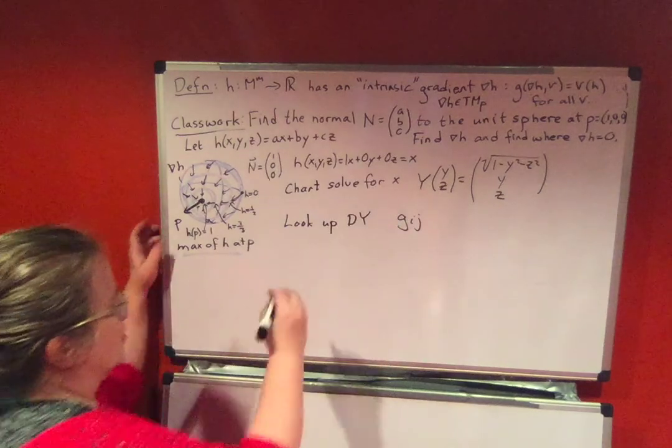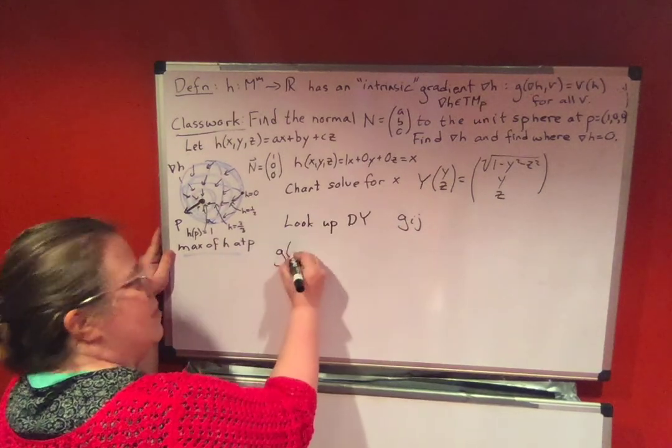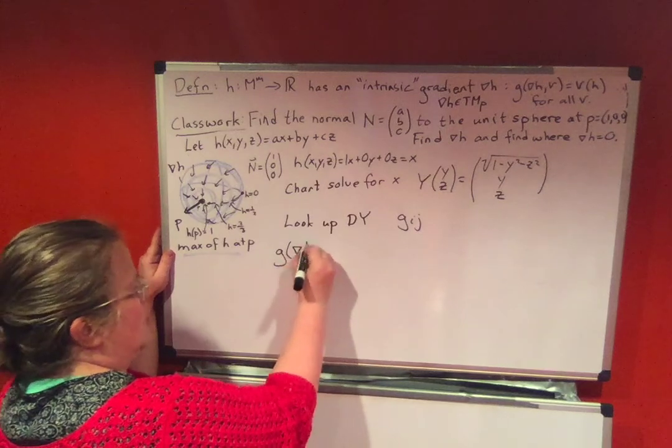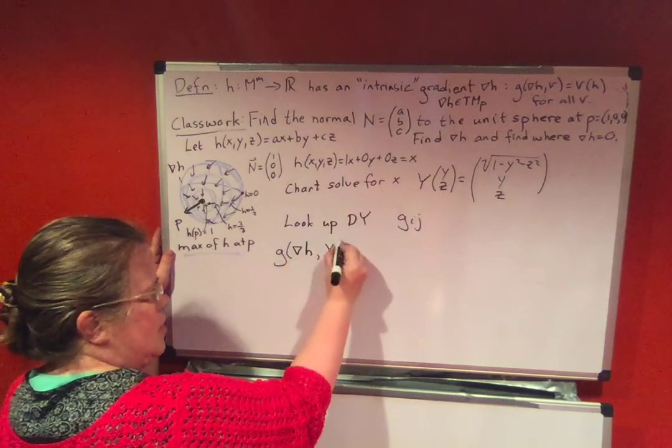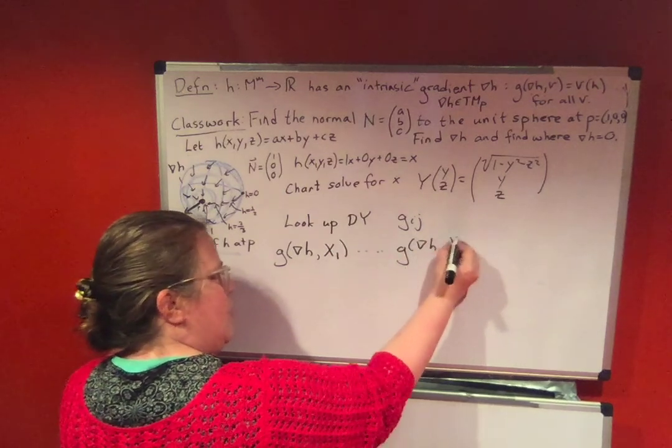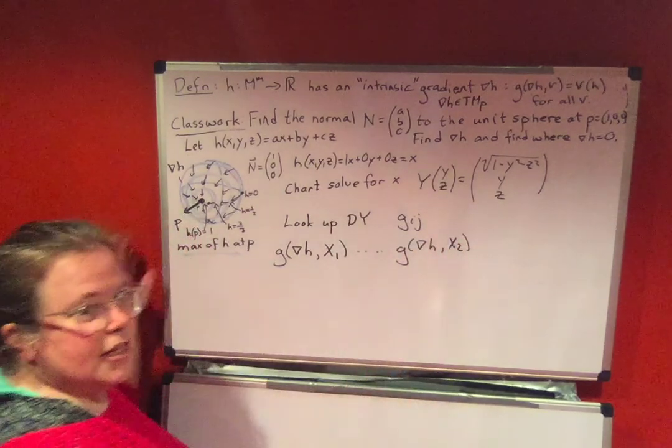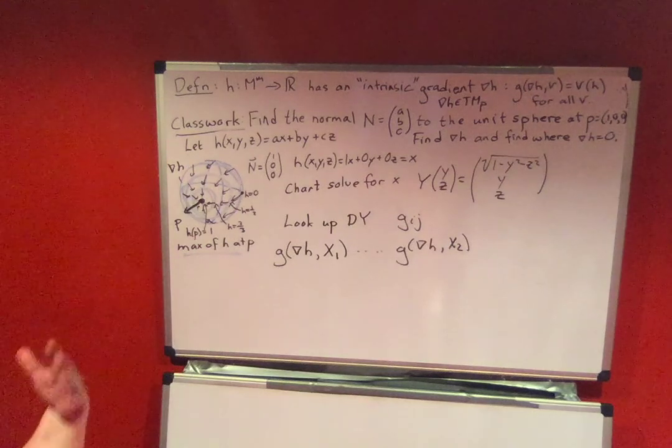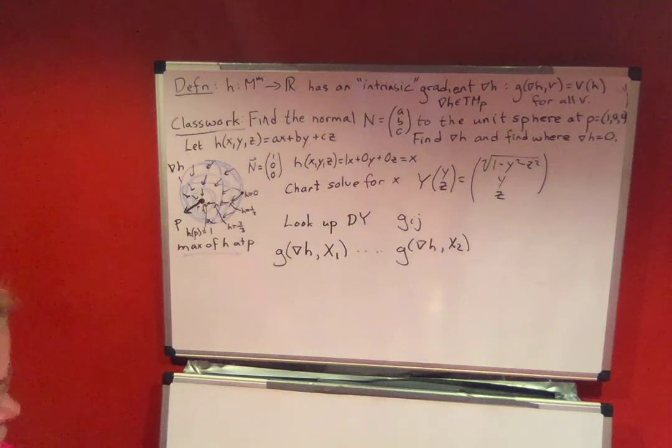you're going to figure out g of grad h x1 and g of grad h x2. And you're going to figure out exactly the formula for the different components, just as we did for the last one.